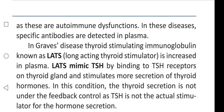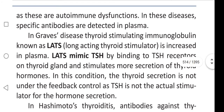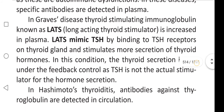LATS mimic thyroid stimulating hormone by binding to thyroid stimulating hormone receptors on the thyroid gland and stimulate more secretion of thyroid hormones. In this condition, thyroid secretion is not under the feedback control, as thyroid stimulating hormone is not the actual stimulator for the hormone secretion. In Hashimoto's thyroiditis, antibodies against thyroglobulin are detected in circulation.